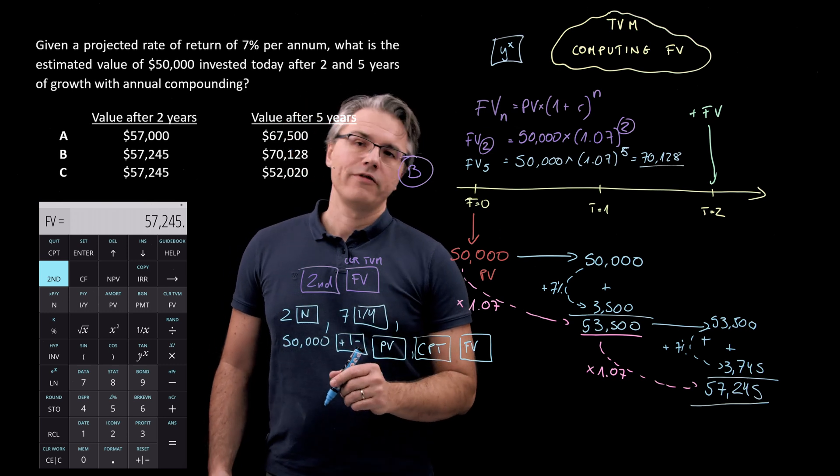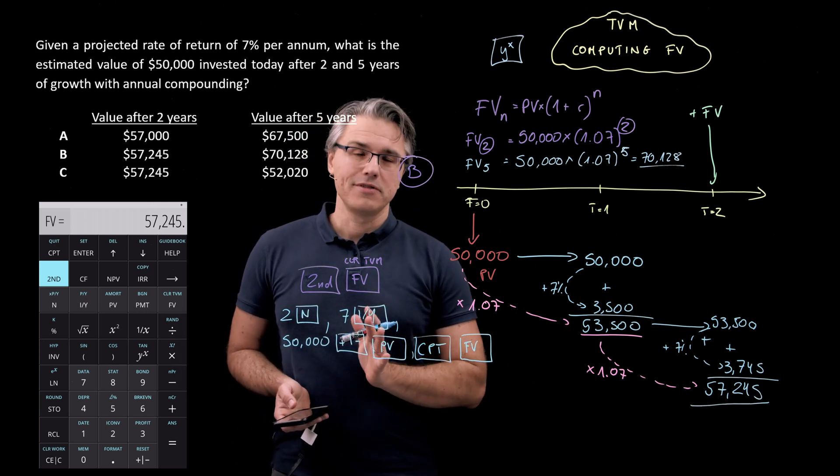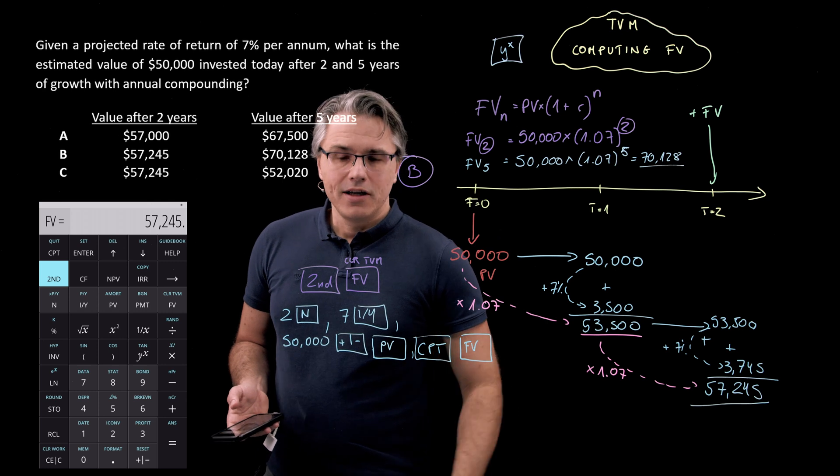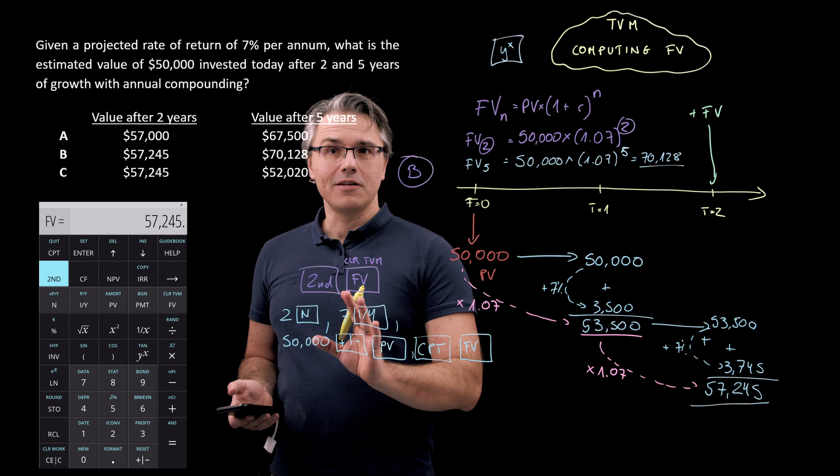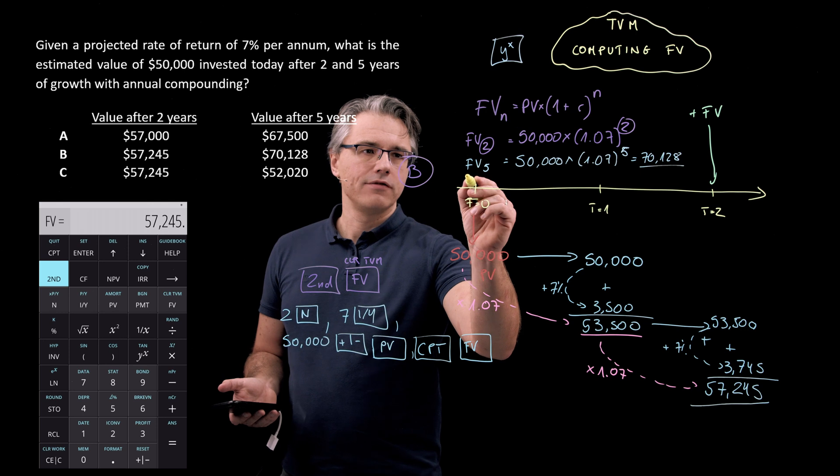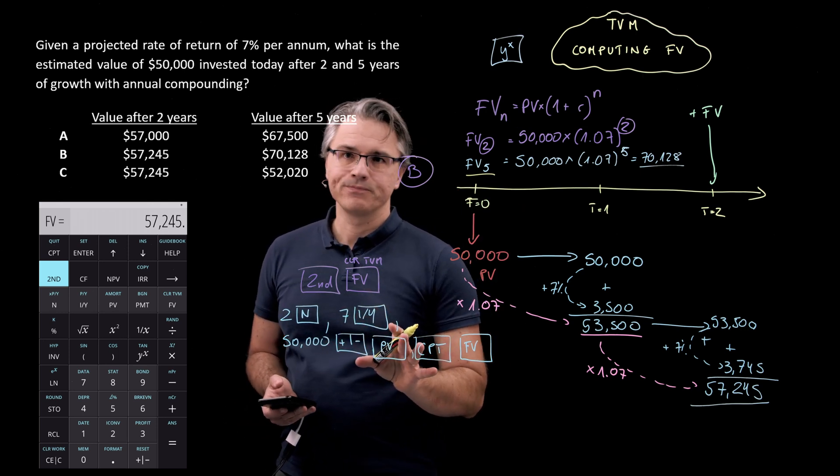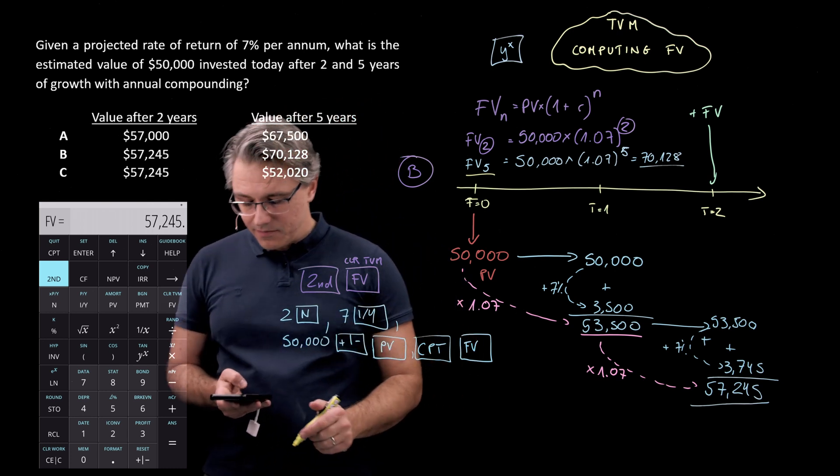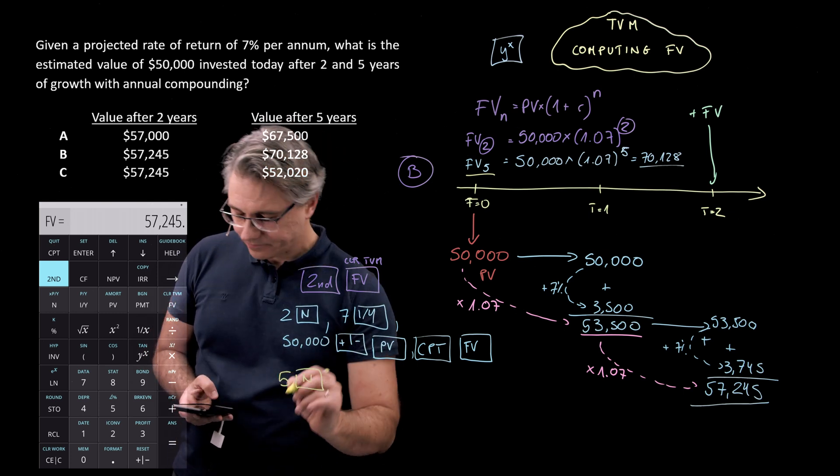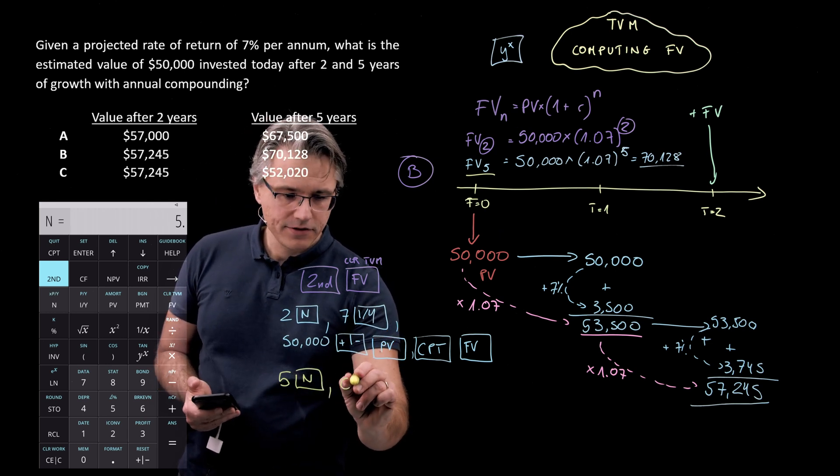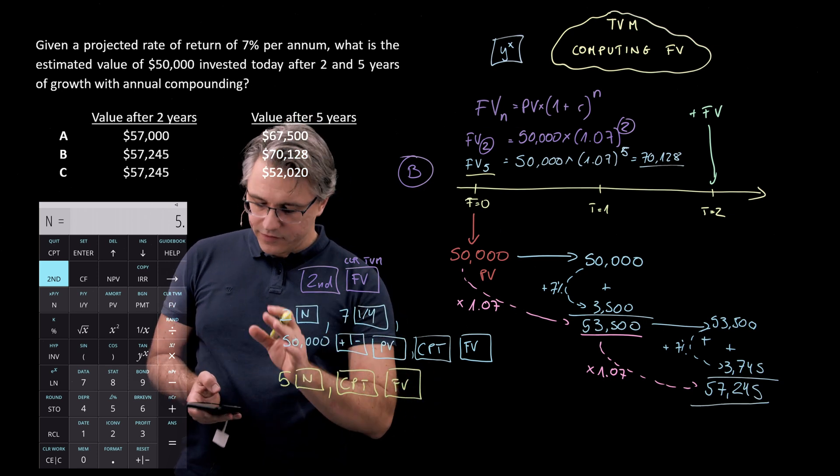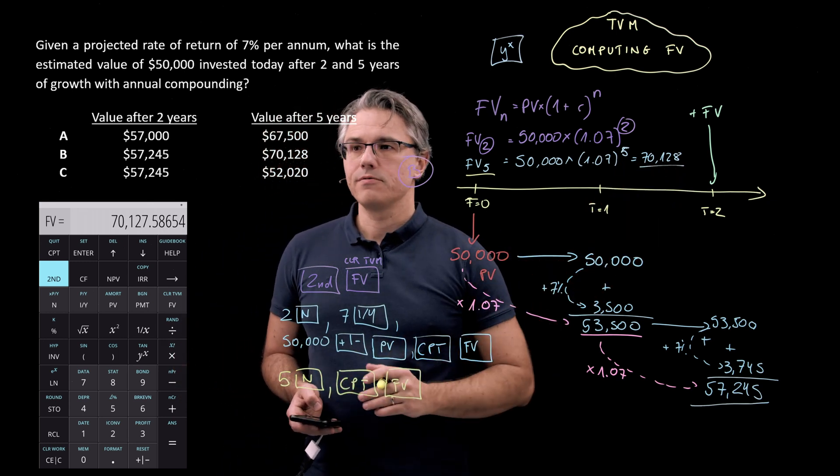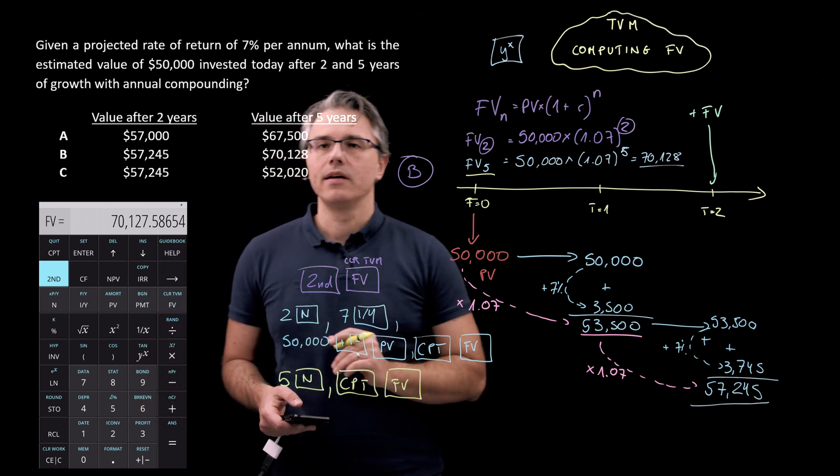Now, the nice thing about using the time value of money worksheet is that it stores the values which you've already input. Sometimes that works against you if you forget to clear the time value of money worksheet. But essentially, because it stores the inputs, you can easily just overwrite the certain inputs and keep the others the same. So if I now want to know what will be the future value of this investment at the end of year five, but keeping all the other inputs the same, so having a required rate of return of 7% and the same PV, I would simply say, well, let's have 5 for N and allow the calculator to compute FV, but this time with the changed input for N, so CPT FV. And as you can see, it shows me an answer of 70,128, which is exactly the same as we wrote out before.